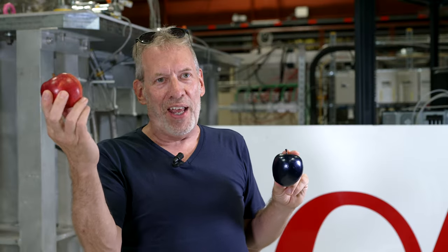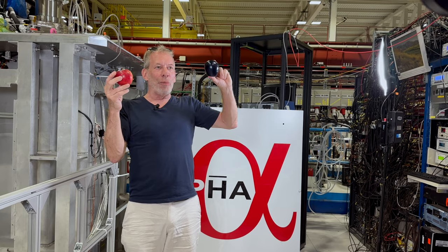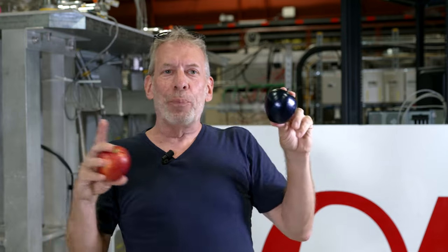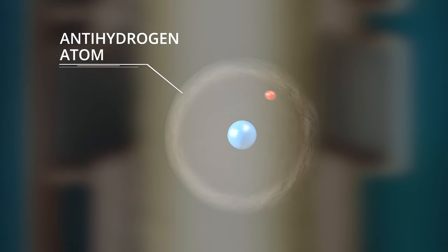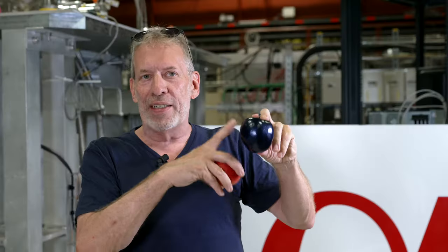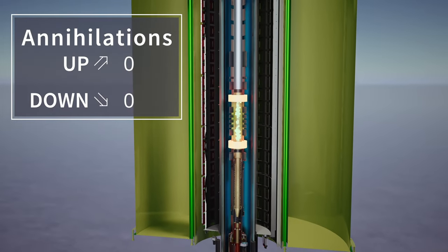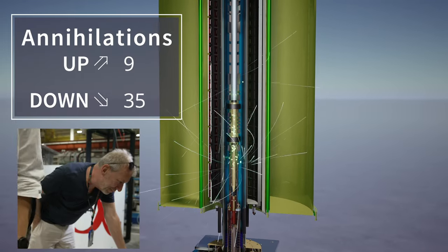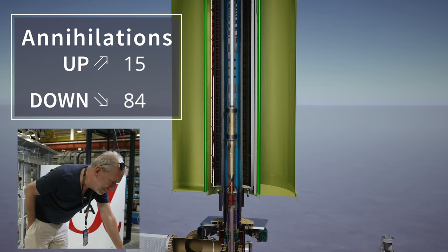Newton told us what happens when we drop this. What happens if we drop this one? Until today nobody knew. We use the simplest atom — anti-hydrogen — number one anti-atom. And what we've done in our experiment is to create some of these atoms, trap them using magnetic fields to keep them away from normal matter so they don't annihilate. So we hold them in a magnetic bottle and then release them and see what happens.